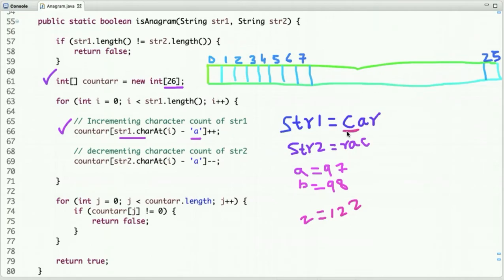The first character in string one is 'c'. The ASCII code of 'c' is 99, and the ASCII code of 'a' is 97, so we get 2. We need to put the value at index 2, so here we are incrementing the count, so the count is 1 now.